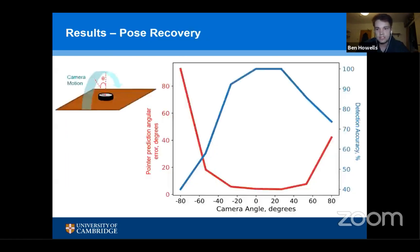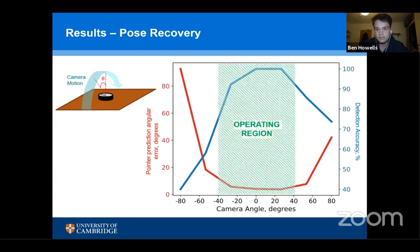We measured sensitivity to camera angle. The blue line in this graph measures detection accuracy — whether we could detect a gauge in an image, where higher is better — and the red line measures angular read error, where lower is better. At zero degrees, which is a face-on camera angle, performance is very strong, and this allowed us to define a safe operating region for our system.